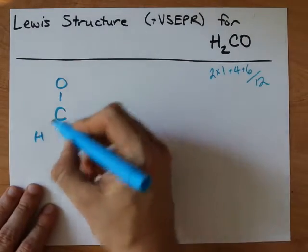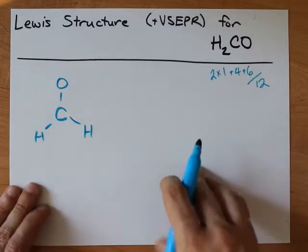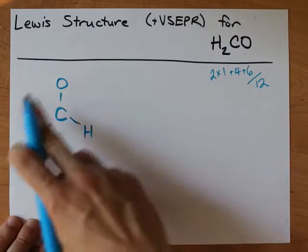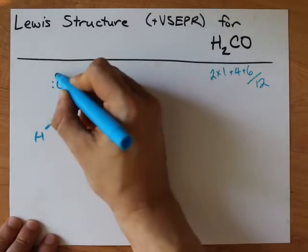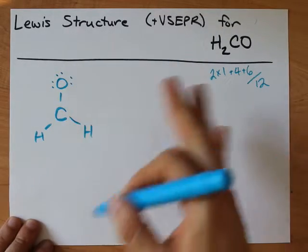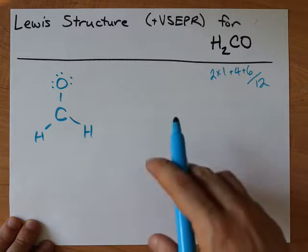So, I like making single bonds between my central atom and all my outer atoms. That's six electrons total. Then, I fill the octets on the outer atoms. Eight, ten, twelve, and I'm out. That's it. That's all the electrons I have for the structure.